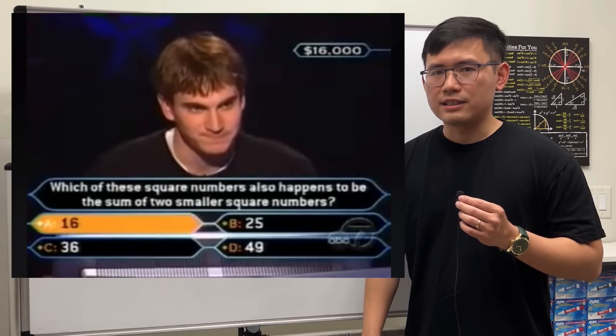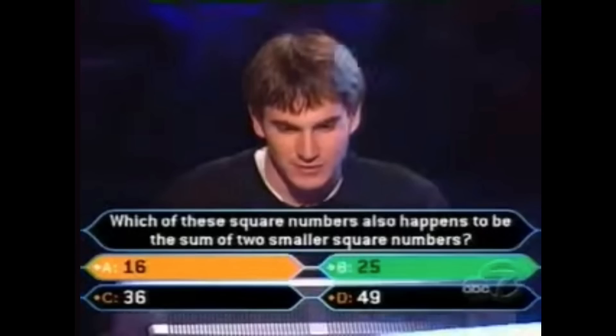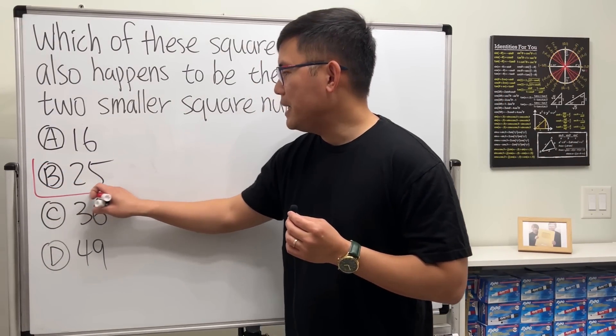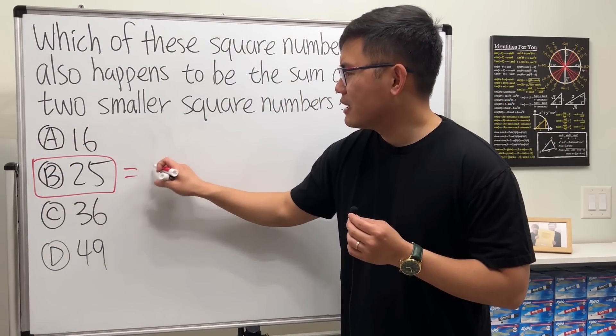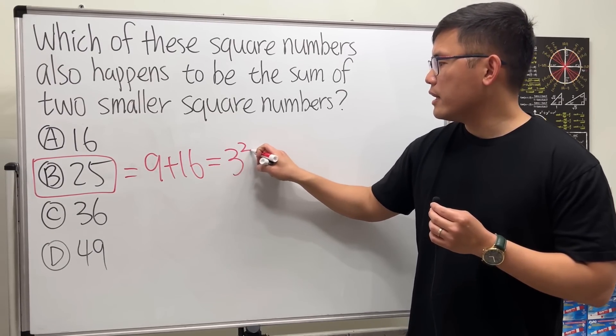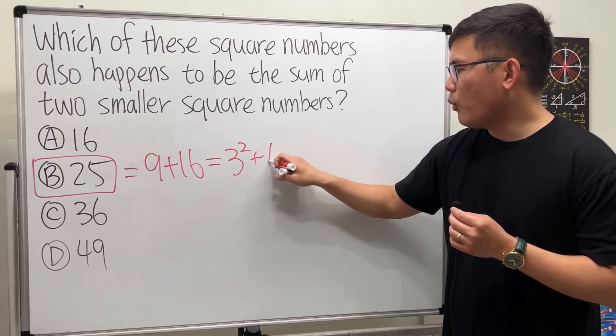Unfortunately, that's wrong. The actual answer is B, 25. Why? Because 25 is 9 plus 16, and 9 is 3 squared, and 16 is 4 squared.